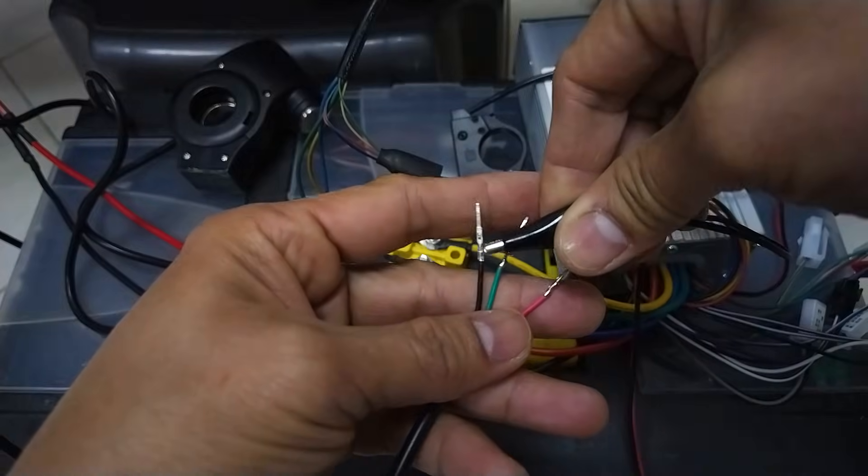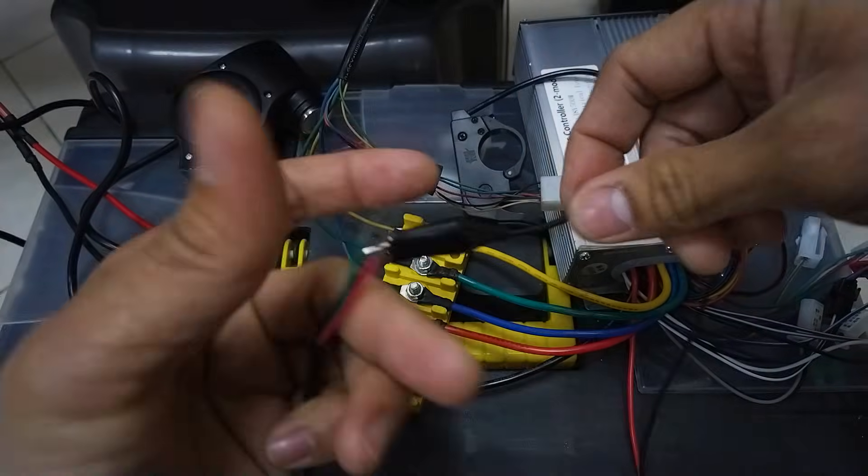The black wire of the key ignition switch is for the negative line wires of the battery and the controller connected to each other.